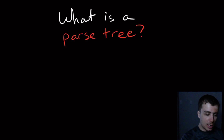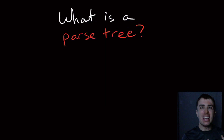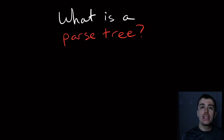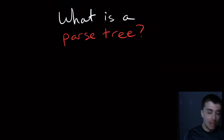I want to talk about what a parse tree is. The purpose of this is to visualize what a context-free grammar is actually doing. Context-free grammars are a way of applying rules to certain things in order to eventually generate a string, but it's not very visual. So let's just do a quick example.